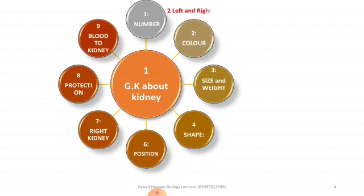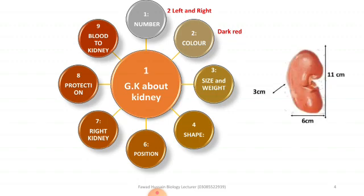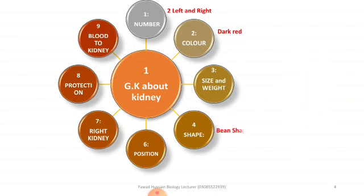Starting with general knowledge about the kidney: there are two kidneys in our body — left and right. The color of the kidney is dark red. The weight of our kidney is 150 grams, and in size, the length is 11 centimeters, 6 centimeters wide, and 3 centimeters thick. The shape is bean-shaped, as shown in the diagram.